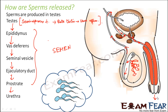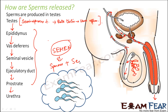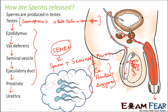So the fluid that actually comes out through the urethra of the penis is semen. Semen is composed of sperms plus seminal plasma. This seminal plasma is found to be very rich in calcium, fructose, and enzymes. The seminal plasma is formed by secretions from the reproductive glands. This is how sperms are released from the body.